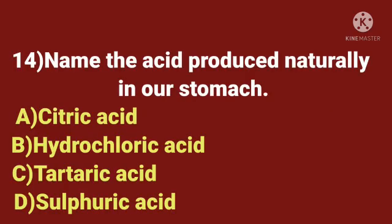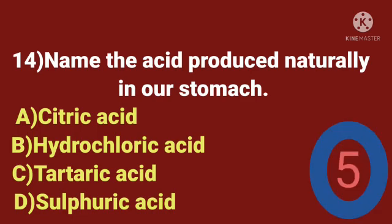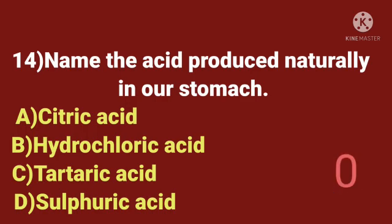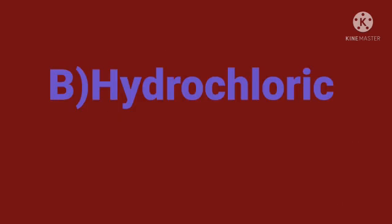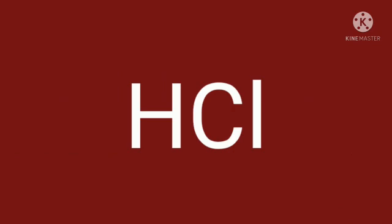Fourteenth question. Name the acid produced naturally in our stomach. A. Citric acid. B. Hydrochloric acid. C. Tartaric acid. D. Sulfuric acid. Time starts now. The answer is hydrochloric acid. The formula of hydrochloric acid is HCl.